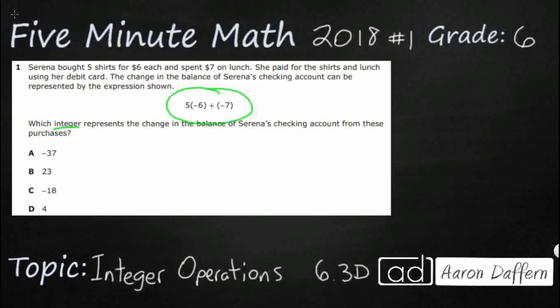Remember, integers are going to be positive and negative whole numbers. So really it's just simplifying what she bought, 5 parentheses negative 6 plus negative 7. And there is a way, and I will show you before the video is done, to find all four of these answers A, B, C, and D from this if you use incorrect operations.